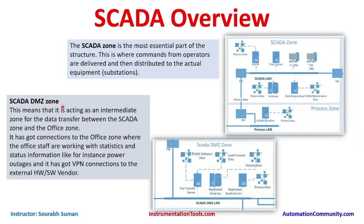The SCADA DMZ zone acts as an intermediate zone for data transfer between the SCADA zone and the office zone. DMZ stands for Demilitarized Zone. It is called demilitarized because there is no direct communication — everything passes through firewalls on both sides. Whatever communication comes into the DMZ is thoroughly inspected by the firewalls before being allowed to pass from one zone to another.